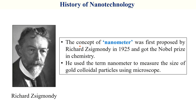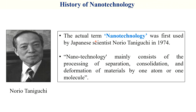The concept of the nanometer was first proposed by Richard Zsigmondy in 1925, and he received the Nobel Prize in Chemistry. He used the term nanometer to measure the size of gold colloidal particles using a microscope. The actual term 'nanotechnology' was first used by Japanese scientist Norio Taniguchi in 1974. He described nanotechnology as mainly consisting of the processing, separation, consolidation, and deformation of materials by one atom or one molecule.